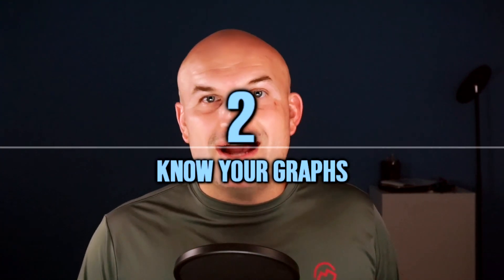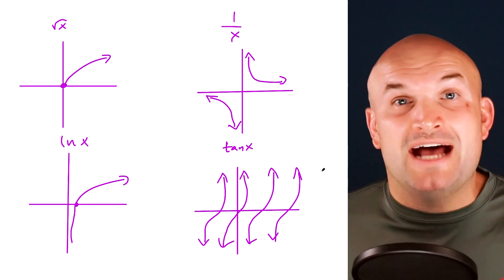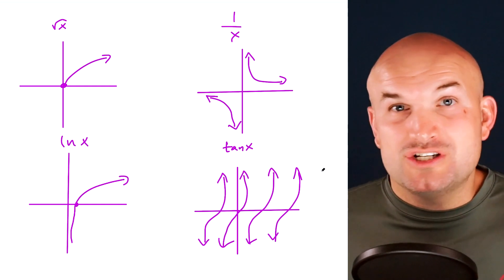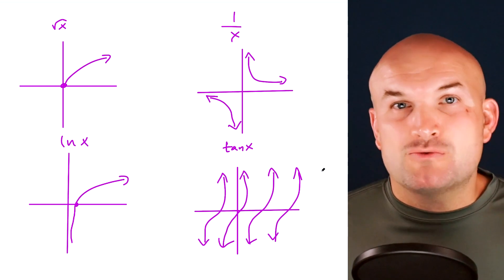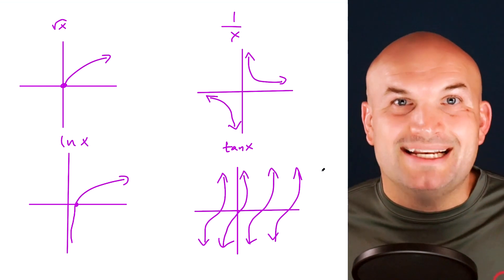Tip number two: know your graphs. The easiest way to graph a function is knowing your parent functions and their transformations. When it comes to the domain, only four basic functions have domain restrictions: the square root function, the reciprocal function, the logarithmic function, and the tangent function. If you know what these graphs look like and what their domains are, transformations simply shift that domain left or right.